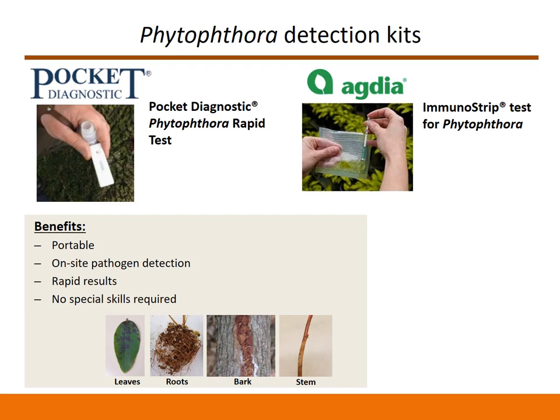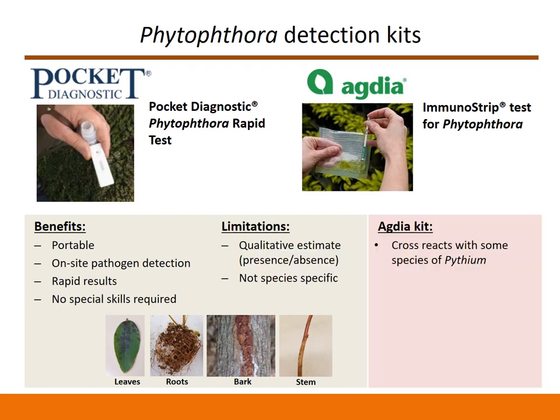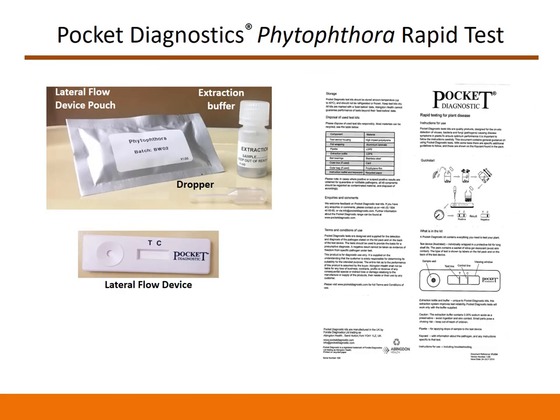They can detect Phytophthora but cannot identify which species are present in the sample. Agdia's kit is also known to cross-react with some Pythium species. In this video, I will show you how to use the Pocket Diagnostic Phytophthora Rapid Test kit. A single Pocket Diagnostic test comes with a lateral flow device sealed in an airtight pouch, which must be opened right before use. The pathogen extraction buffer is provided in a small plastic bottle containing metal beads, which allow for easy crushing of the plant material by simply shaking the bottle. The test also provides an instructional sheet and a dropper to load sample onto the lateral flow device.